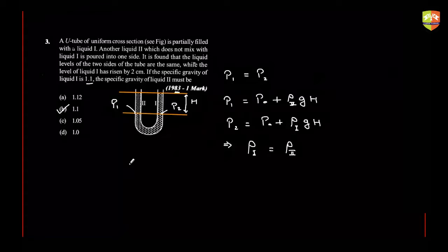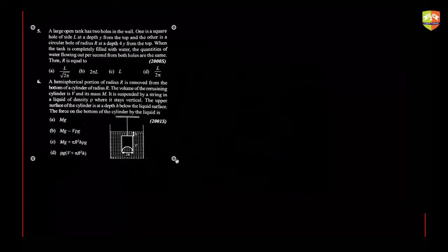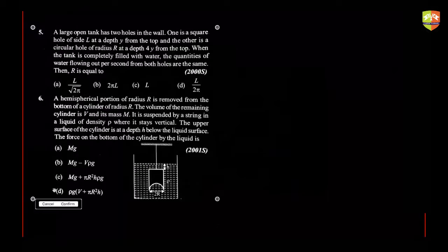I'll move to the next question. You can see there are two questions on your screen — try attempting both of them. It is written that it's a large open tank, so you can consider that the area of cross-section of the tank is much greater than the area of the holes, so you can use Torricelli's law.